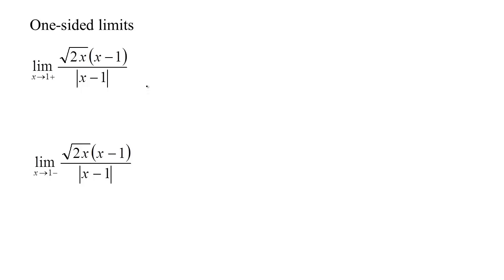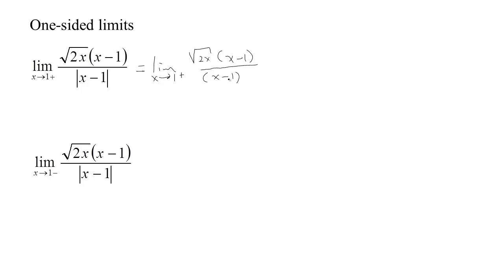Let's look at a couple more examples. Absolute value is a big one — it's kind of a piecewise function because when the number is negative it behaves one way, and when it's positive it behaves another way. If x is going to 1 from the high side so that x is always 1 plus a bit, then x minus 1 will always be a little bit more than zero — positive. Since absolute value leaves positive numbers alone, we can just drop the absolute value bars and simplify.